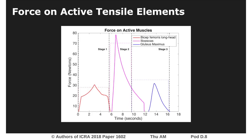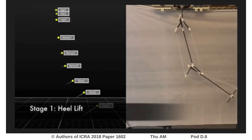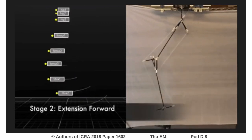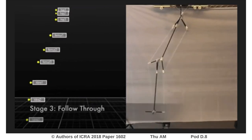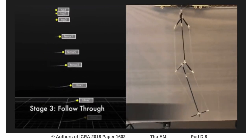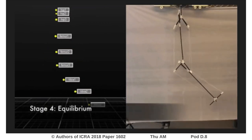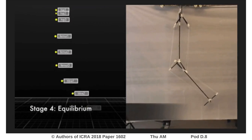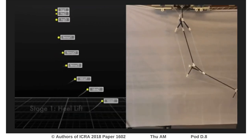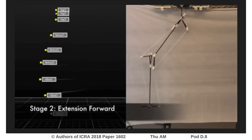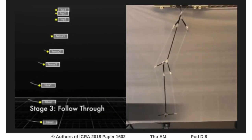As shown in the plot, stages one through three are contracting one single muscle to imitate one cycle of gait. The foundation of our simulation led us to the physical prototype shown here. As shown in the clip, by contracting or extending the three active tensile elements we are able to generate four stages of gait.